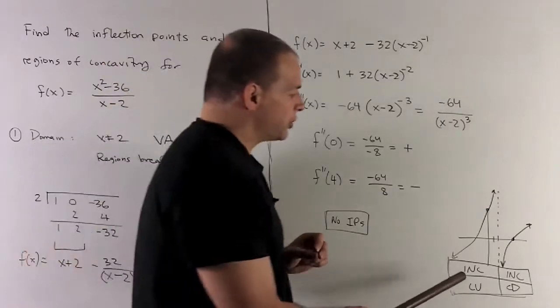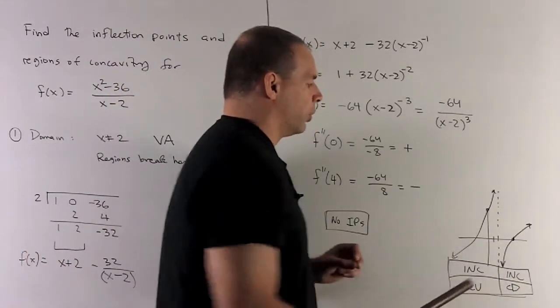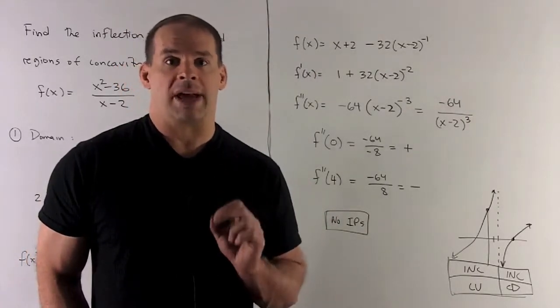So we have our switch from concave up to concave down. But 2 can't be an inflection point because it's not even in the domain. We have a vertical asymptote there.